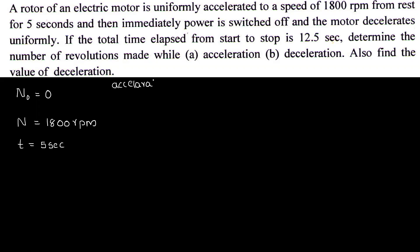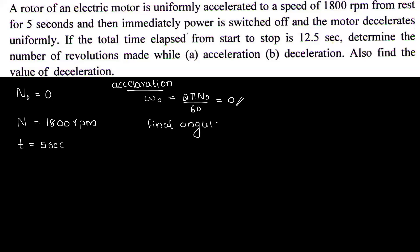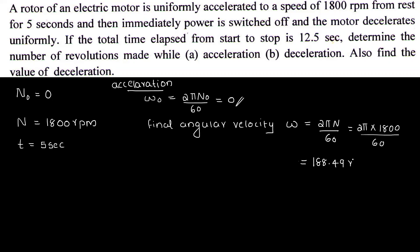For the acceleration phase: the initial angular velocity is 0. The final angular velocity is equal to 2π into 1800 divided by 60, which equals 188.49 radians per second.